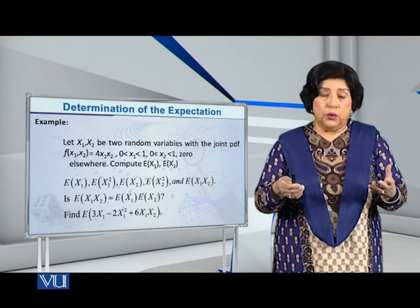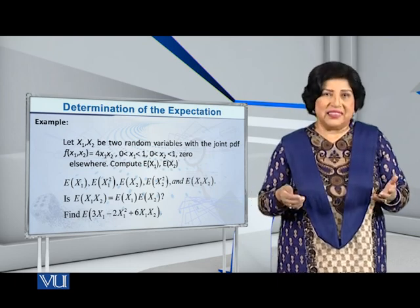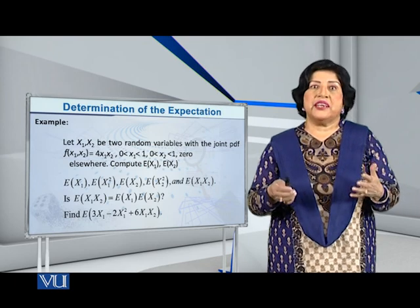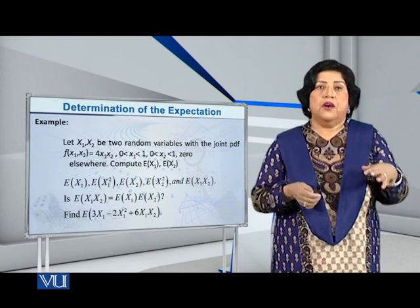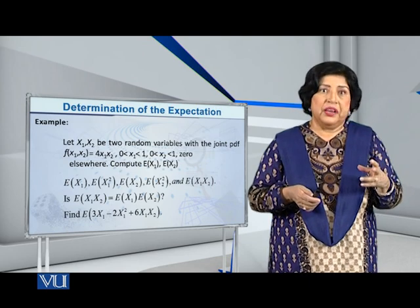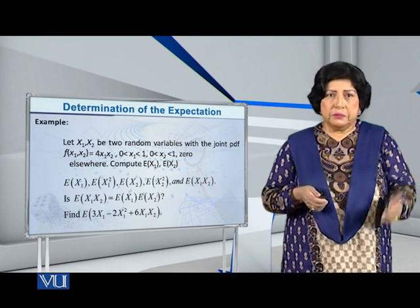If they are equal, we can probably say, or certainly say, that x1 and x2 are independent random variables, or if they are not equal, then it means that they are not independent. So let's see what is going to happen.